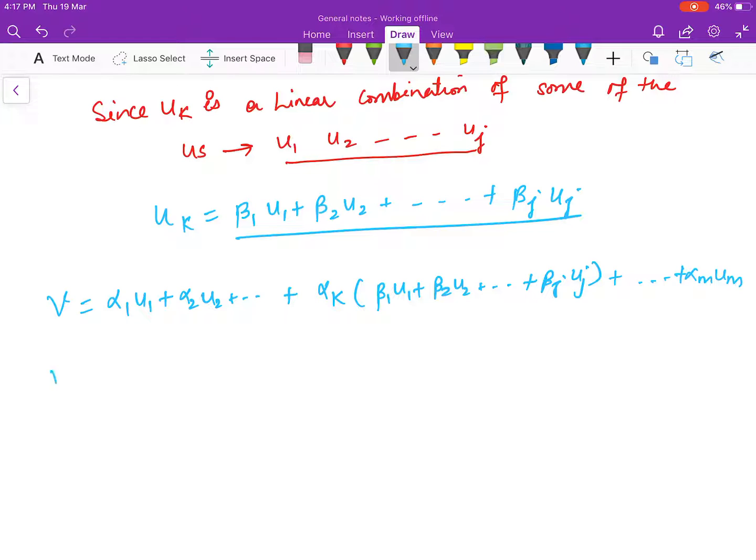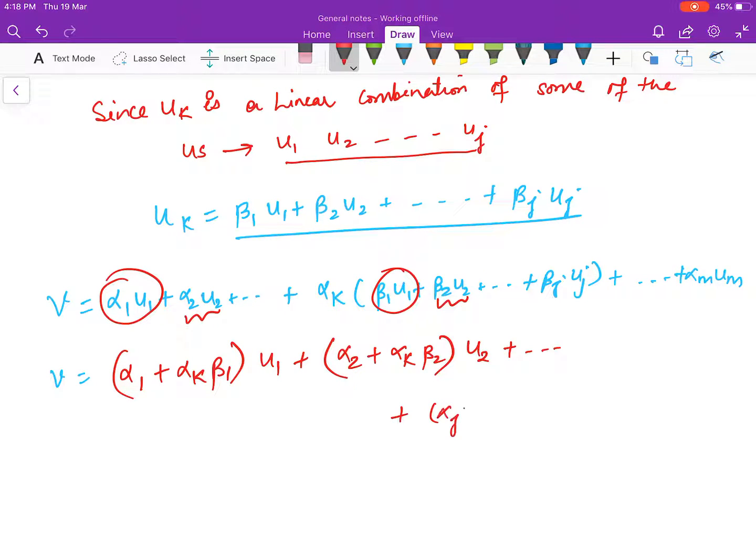So now what you can do - you can just combine u1 terms and then you can combine u2 terms and so on. So you have (alpha_1 + alpha_k beta_1) u1 plus (alpha_2 + alpha_k beta_2) u2 and so on (alpha_j + alpha_k beta_j) uj.